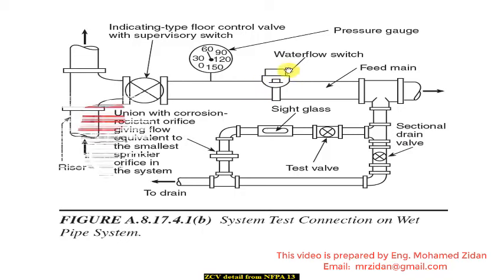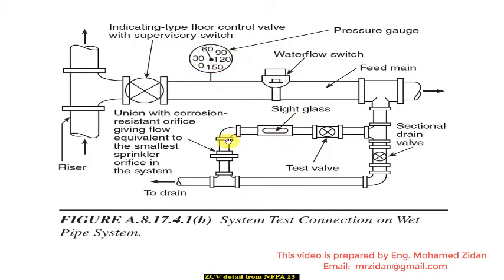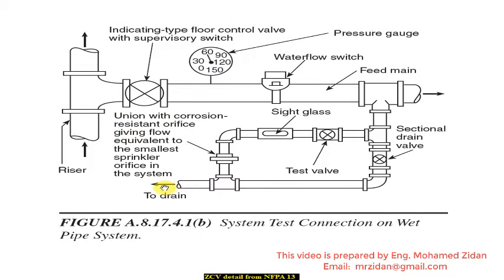Then we will have a flow switch. After that we will have a T-connection for draining the line in case of cleaning or flushing. The drain line will be controlled by a gate valve, and we also have a bypass on this line which includes a test valve or sight glass to check the quality and flow of the water. After that we have an orifice. At the end point of the drain line, we can connect a hose to the nearest floor drain or connect to the nearest drain line.